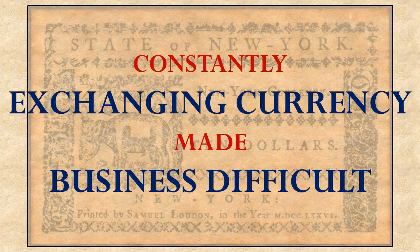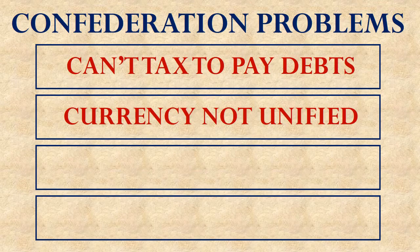That was particularly problematic at this time because the economy was struggling in the aftermath of the American Revolution. So that gives us our second problem under the Articles of Confederation: there was no unified currency to allow them to easily do business.